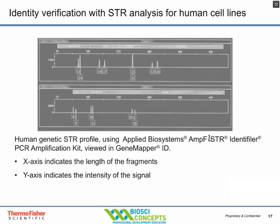Here's an example using an Applied Biosystems kit for human genetic STR profiling. Fragments are run out on something like HPLC. The x-axis indicates the length of the fragments, which would be fairly standard in a specific cell type, and the y-axis indicates the intensity of the signal. Some of these small tandem repeat probes will also identify a male cell with a Y chromosome.